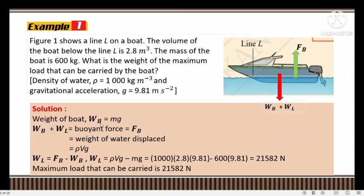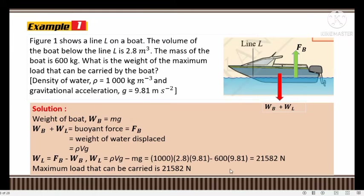From this relationship we can determine the weight of the load: weight of load equals buoyant force minus weight of boat, which equals weight of water displaced minus weight of boat. Weight of water displaced is rho·V·g, so we substitute: density of liquid multiplied by volume of the boat below line L (which equals volume of liquid displaced) = 1000 × 2.8 × 9.81, minus weight of the boat = 600 × 9.81.